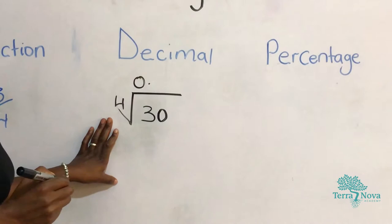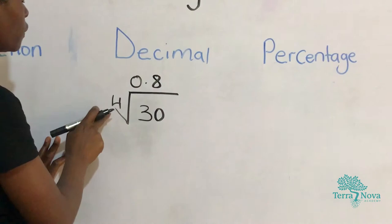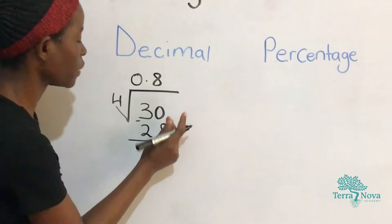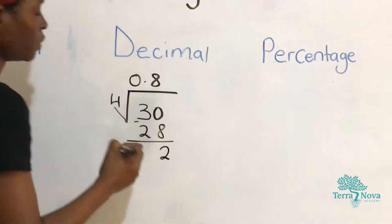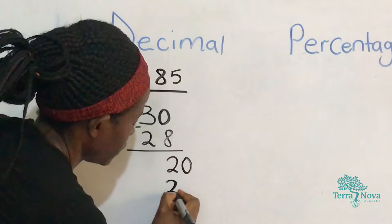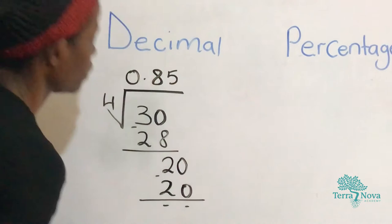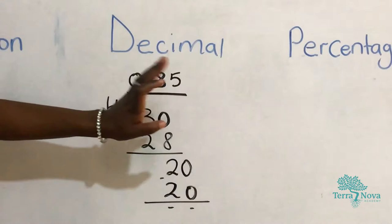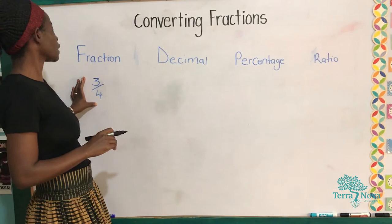So 30 divided by 4, we get 8. 8 times 4 is 28. So 30 take away 28, we remain with 2. We are going to add on a 0 so that we can divide it. So 20 divided by 4 is 5. 5 times 4 is 20. 20 minus 20 is 0. So that means 3 out of 4 is 0.85 as a decimal.